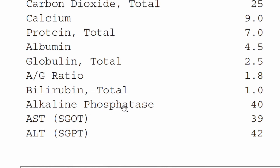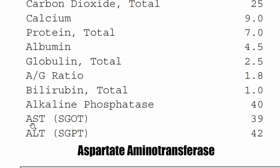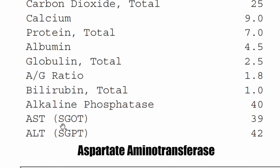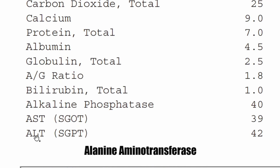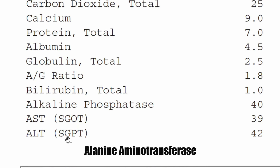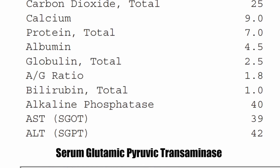Alkaline phosphatase — if this is the only one elevated and AST and ALT aren't elevated, then the tissue damage may be due to bone damage or some other organ. AST, if elevated by itself, could be liver or some other organ damage. But if ALT is elevated, it's usually due to liver damage. AST stands for aspartate aminotransferase, also known as SGOT (serum glutamic oxaloacetic transaminase). ALT stands for alanine aminotransferase, also known as SGPT (serum glutamic pyruvic transaminase).